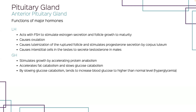Luteinizing hormone, or LH, acts with FSH to perform several functions. It stimulates the follicle and ovum to complete their growth to maturity, stimulates follicle cells to secrete estrogens, and causes ovulation. Because of this, LH is sometimes known as the ovulation hormone. It also stimulates the formation of a golden body, the corpus luteum, from those ruptured follicles. In males, LH stimulates interstitial cells within the testes to develop and secrete testosterone, the male sex hormone.